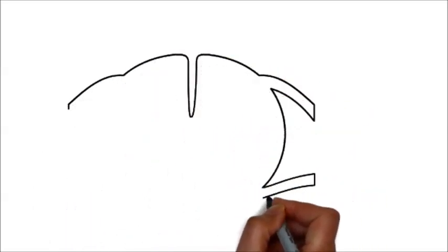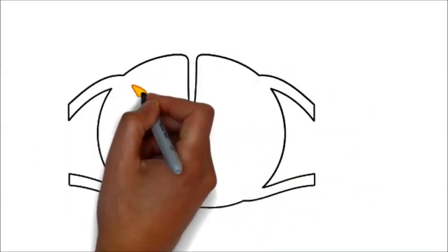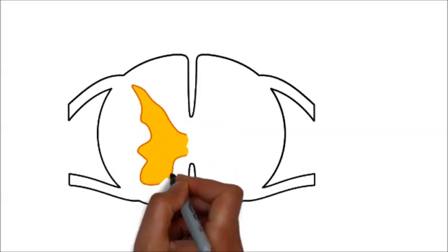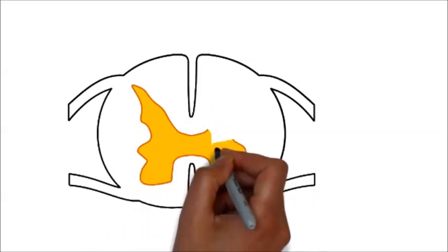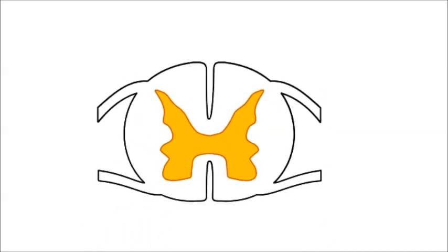I'll begin this review of somatosensory system with the cross-section of the spinal cord shown here with the white matter in the outer portions and the gray matter colored gold here in the center.